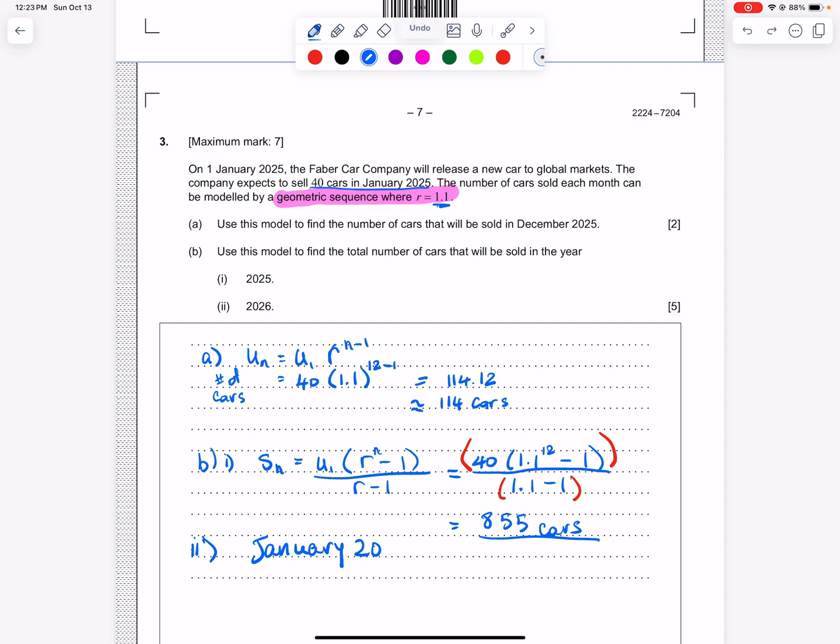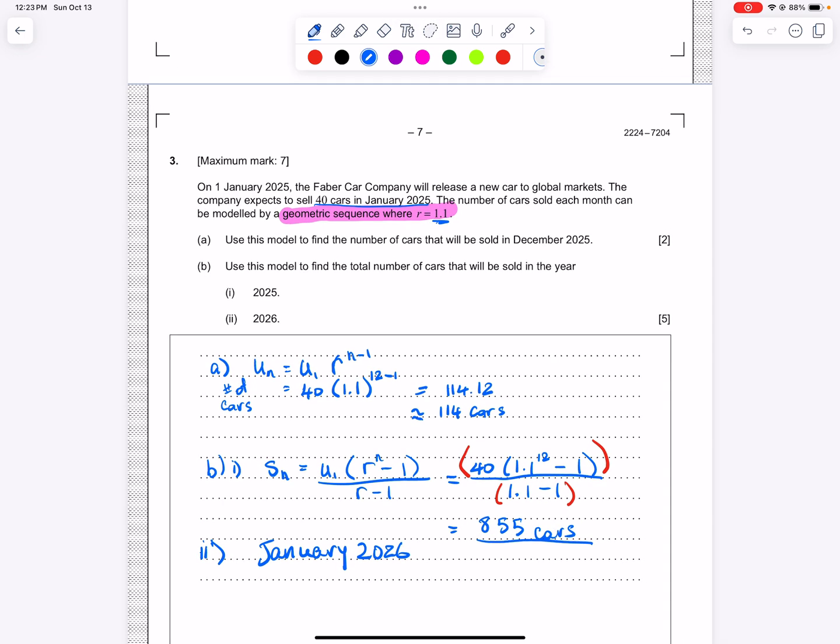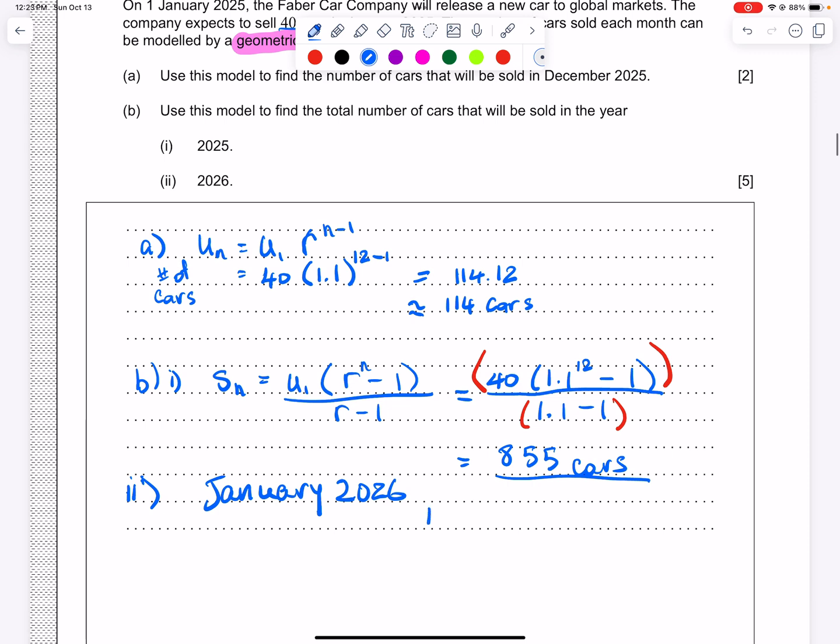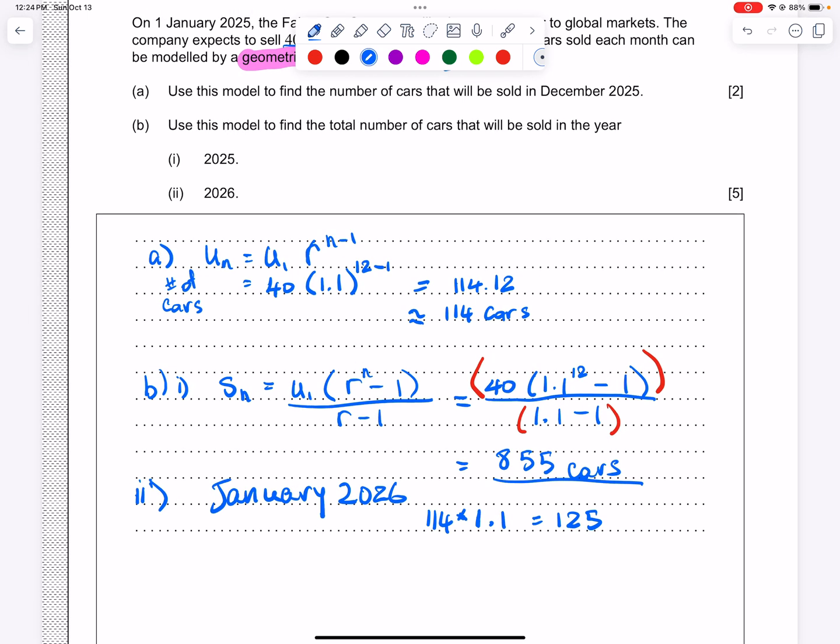All right. So we know December was 114, and we know that the following month will be that number times our common ratio, which is 1.1. So this is multiply here. When we multiply, we get 125 cars. So this is the number of cars sold in January 2026.